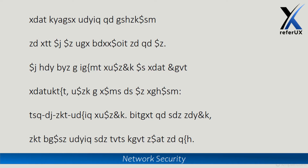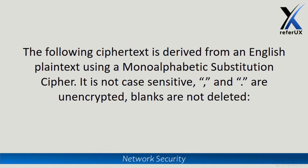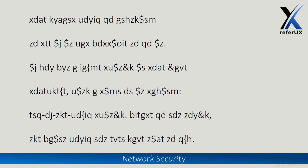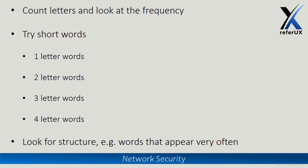In this video guide we use a cipher text which is derived from an English plain text using a mono-alphabetic substitution cipher. Please note that it is not case sensitive in this example, and the commas and full stops are unencrypted, and blanks are not deleted. This is the cipher text we are going to decrypt today. Some hints: first, we need to count letters and look for the frequency, which is very important to find the most frequent letters.